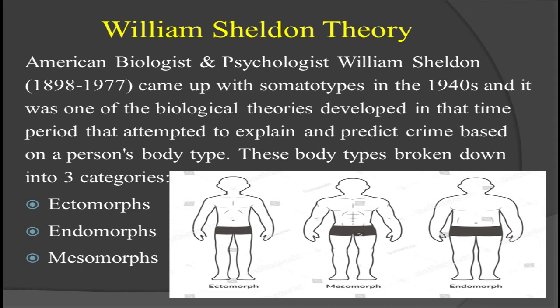Somatotype means a body type — a kind of physical structure of a body with different variations. William Sheldon was an American biologist and also a psychologist, and a prominent biological theorist. He predicted that people commit crime because of their body structures, and he classified them into three categories: ectomorphs, endomorphs, and mesomorphs.